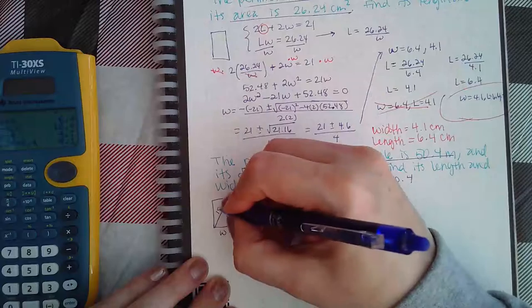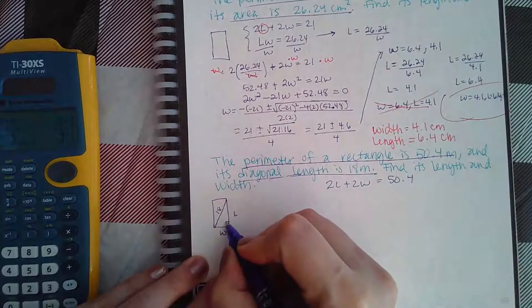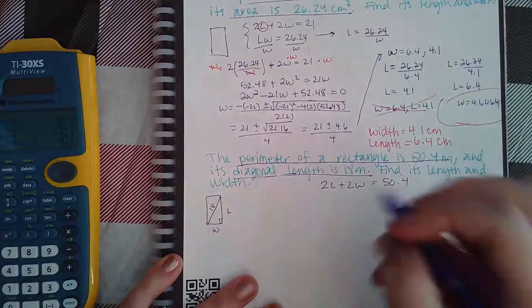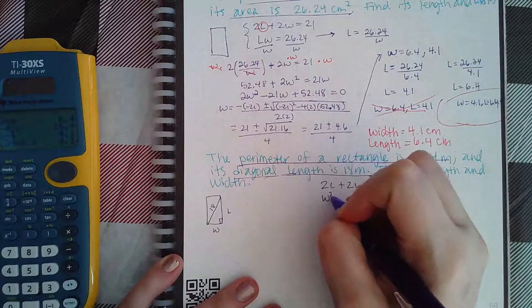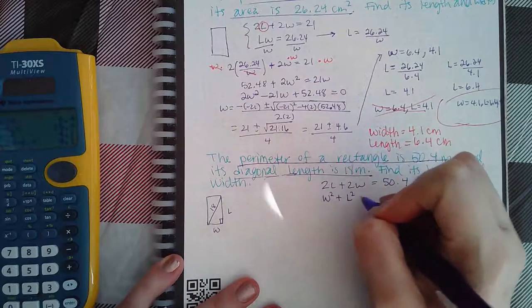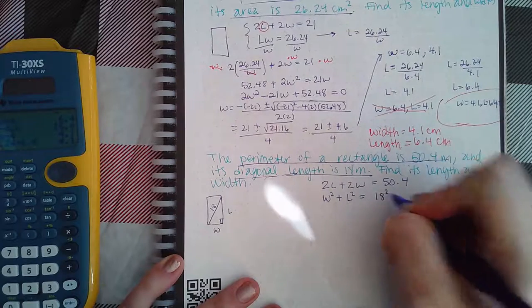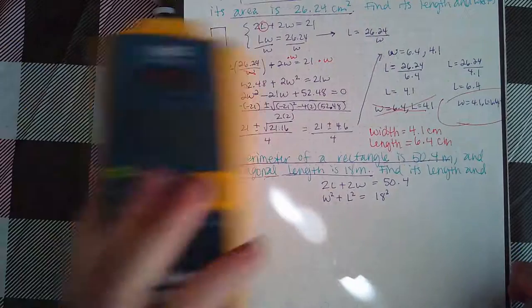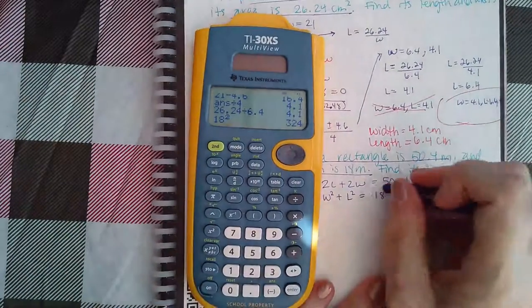But then it tells me the diagonal length is 18 meters. You have your width, you have your length, and I know that this is 18. Well, this is a right triangle and I can use my Pythagorean theorem to come up with another equation. I know that one side squared plus the other side squared should equal the hypotenuse squared. What is 18 squared? 324.